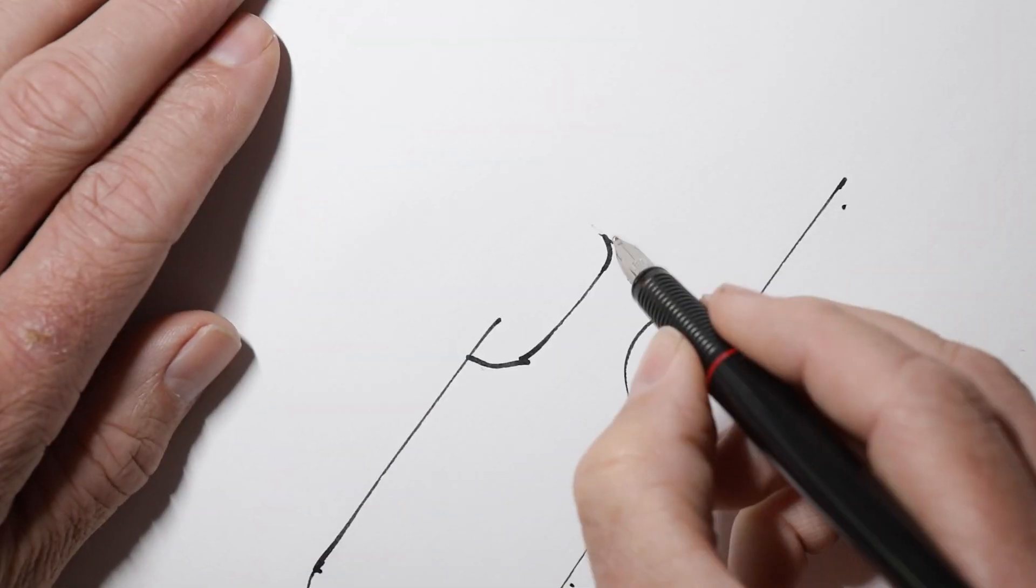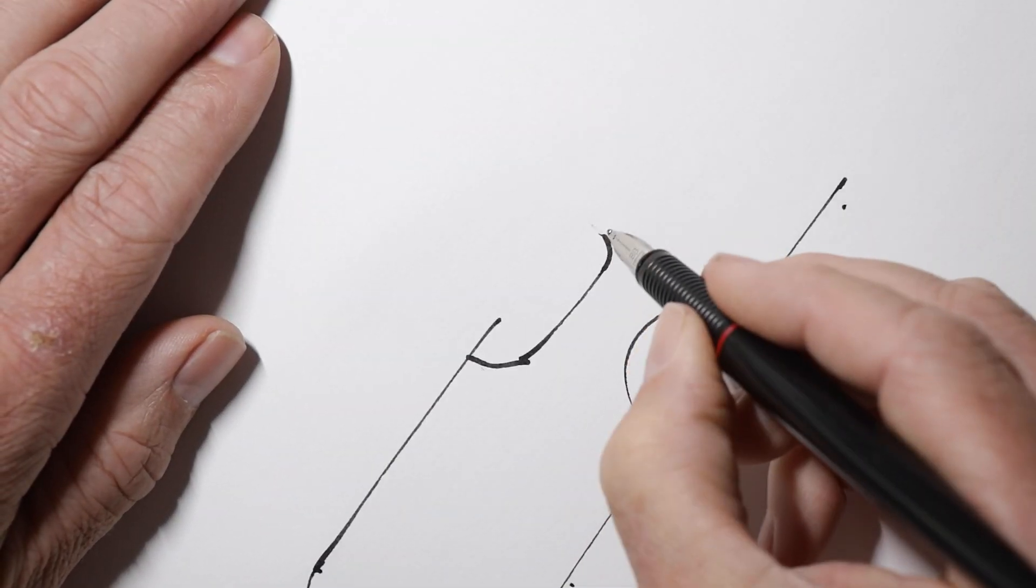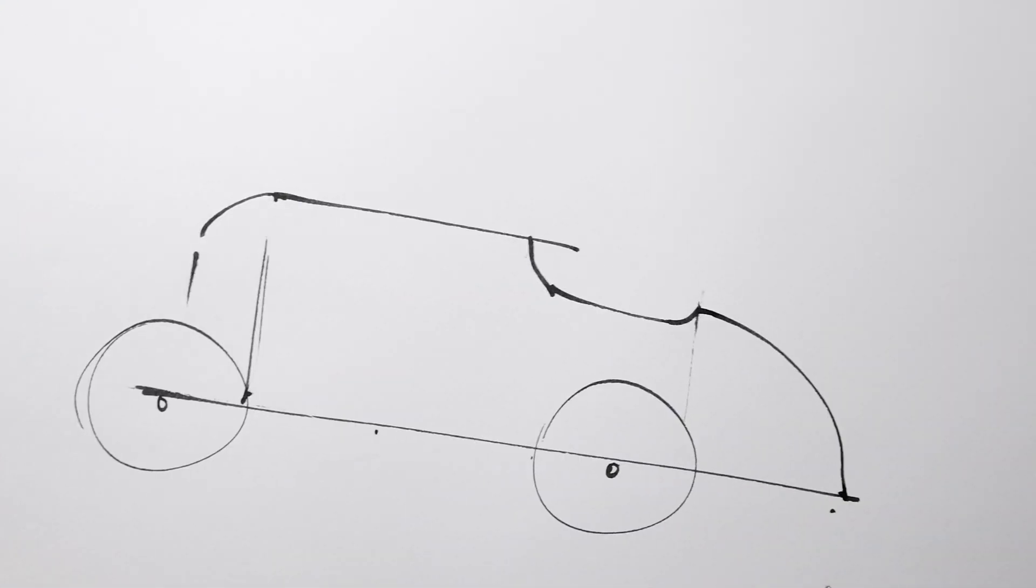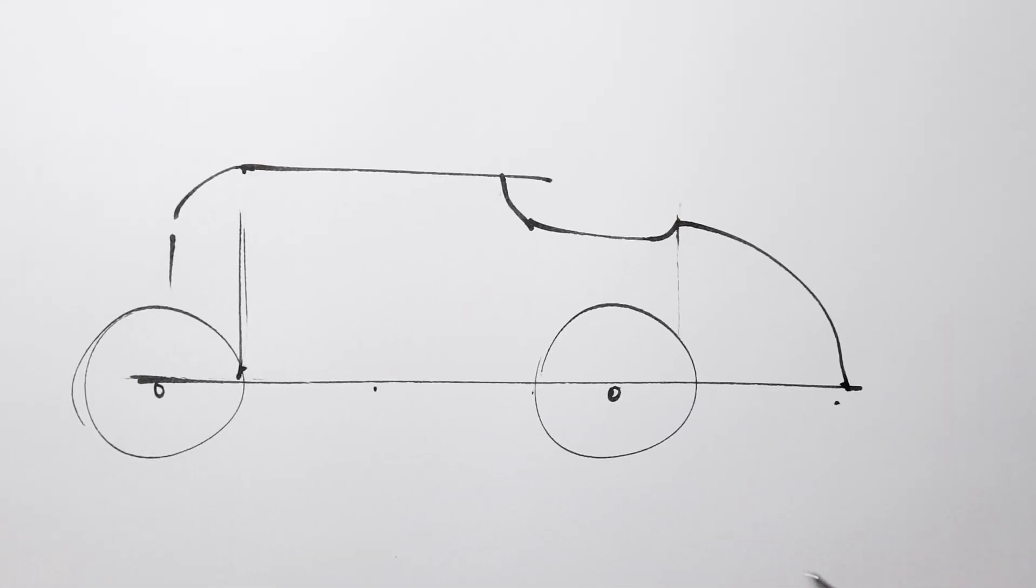Now we need a nice arc going from here to the tip of our tail. Something like that. And now the undertray, it's very low at the bottom of the car, runs underneath, comes down slightly at the front, and then tapers off to the tail.